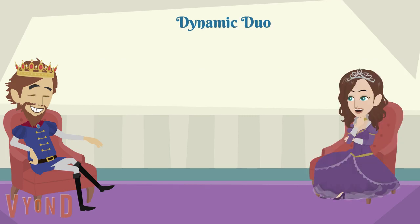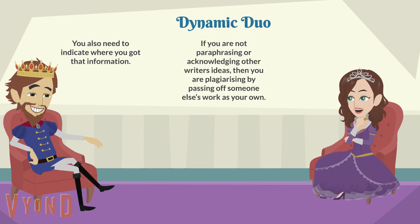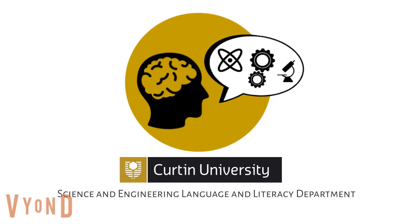You also need to indicate where you got that information. Referencing and paraphrasing are dynamic because you can't do one without the other. If you're not paraphrasing or acknowledging other writers' ideas, then you are plagiarising by passing off someone else's work as your own. And this is a violation of the standards of integrity.